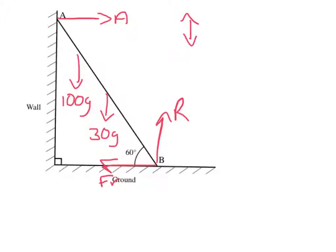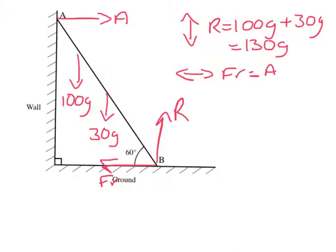If I look at the up down forces I can see that R has to equal 100g plus 30g. So that is 130g. If I look at left right I can see that friction has to equal A. And I also know that at the point B friction equals μR. μ is a half so friction is one half R which is 65g.